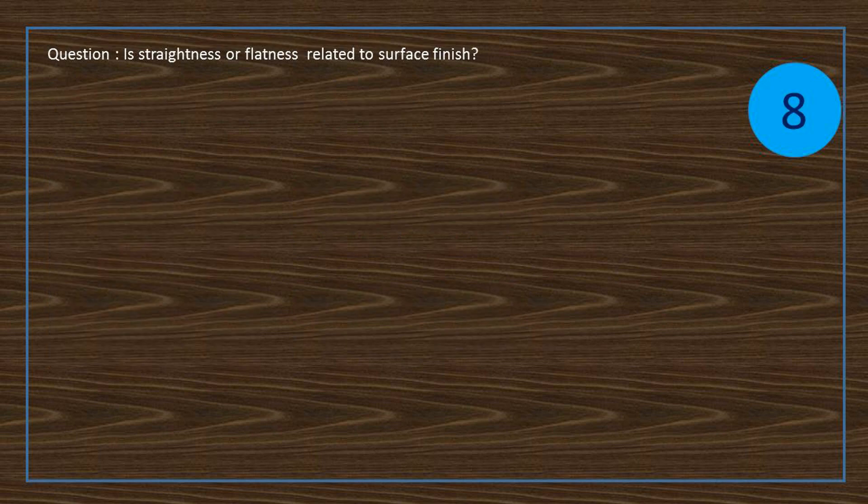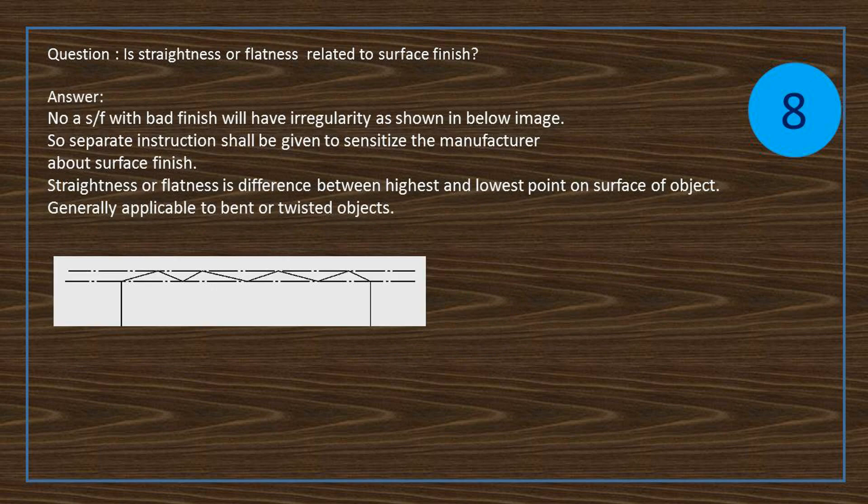Question: Is straightness or flatness related to surface finish? Answer: No, a surface with bad finish will have irregularity as shown in below image. So separate instruction shall be given to sensitize the manufacturer about surface finish. Straightness or flatness is difference between highest and lowest point on surface of object, generally applicable to bent or twisted objects.